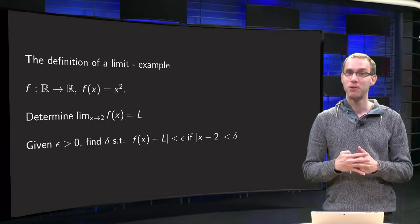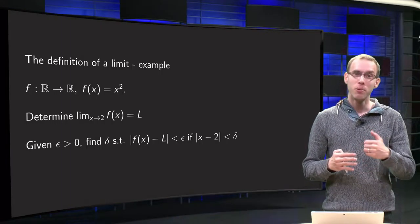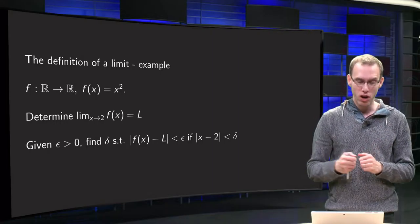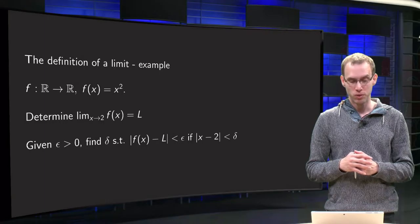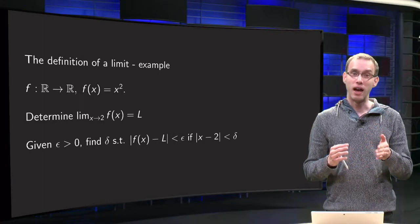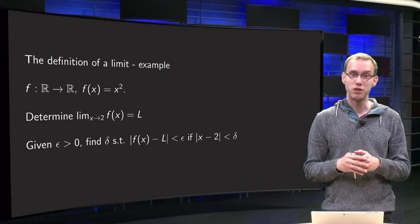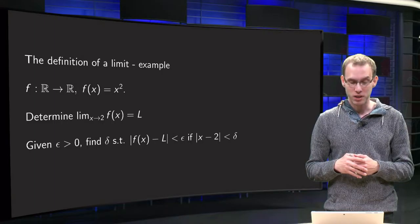Well, let's try! We take the function f equals x squared, f from R to R, and we wonder what happens if x approaches 2. So we want to determine the limit of f(x) as x approaches 2, and we call this limit L.